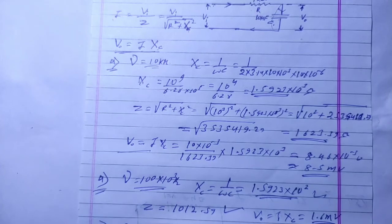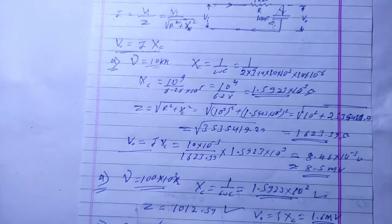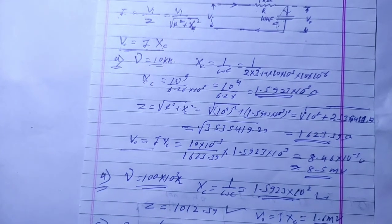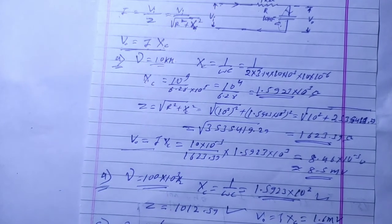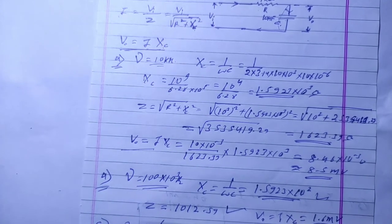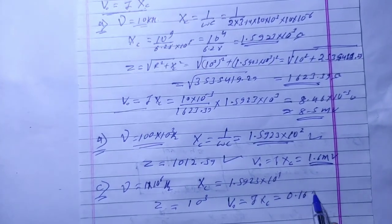For 1 MHz (10 to the power 6 Hz), solving XC using the same formula gives XC equal to 1.5923 into 10 to the power 1 ohms. Z is approximately 1000.25 ohms. The output potential works out to approximately 0.16 millivolt.